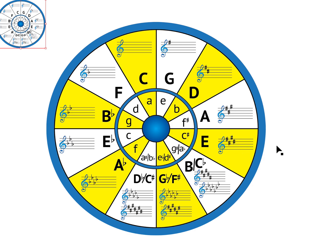Next we have a circle of fifths that is color coded. If we look at just the yellow, we see that we have a whole step every time. C to D is a whole step, D to E is a whole step, E to F sharp is a whole step, G flat to A flat a whole step, A flat to B flat. So if we circle in simply whole steps we're not going to get through all 12 notes.